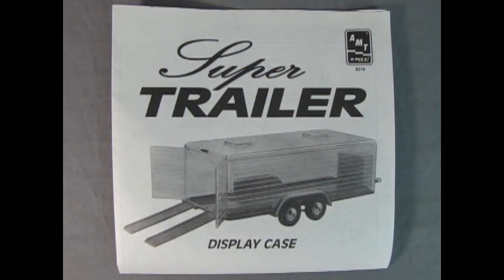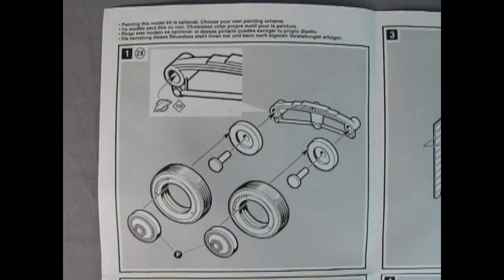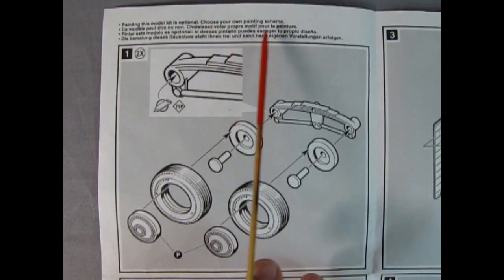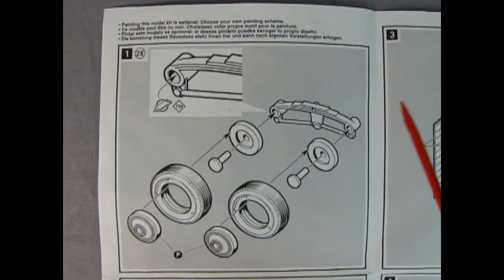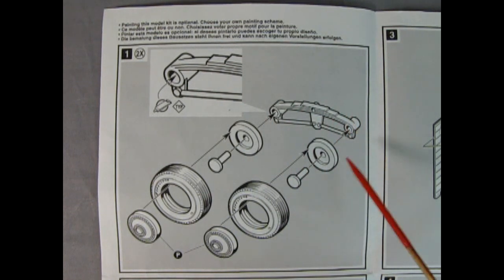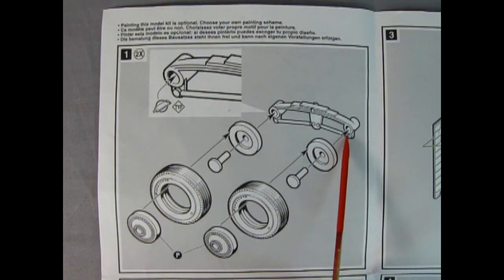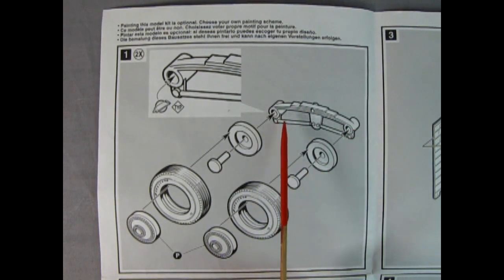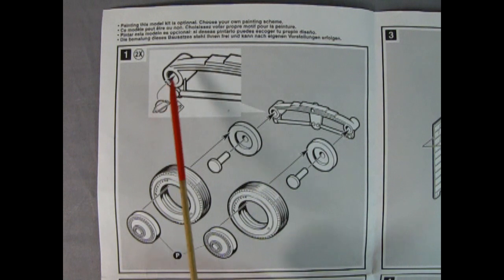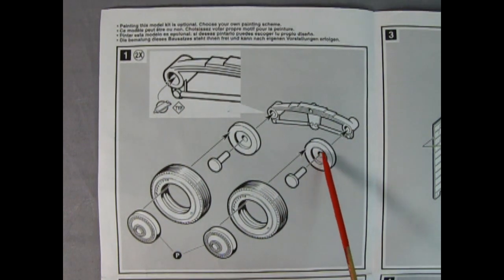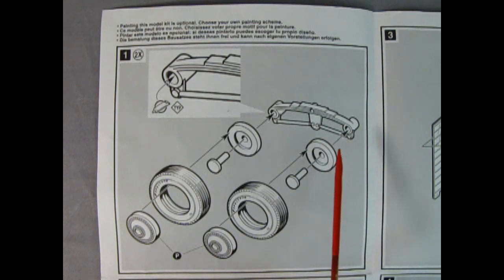Lifting off the box we have the trailer instructions as well as chrome plated parts, clear parts, gray plastic molded pieces, our four tires and this wonderful old blue printer. This is what you'd send away to get an amazing magazine from AMT Ertl, although you can't get it anymore because this is from 1998. Here we have AMT Ertl's super trailer instructions with a wonderful illustrated drawing. It says painting this model is optional. Choose your own painting scheme. So let's get this thing on the road. What we have here is our leaf springs for our trailer with a wheel back, pin, Firestone tire and hubcap.